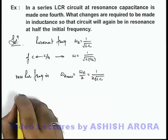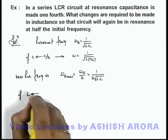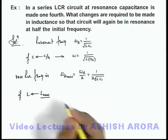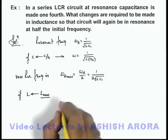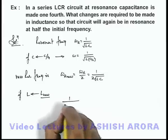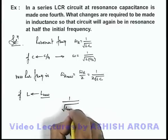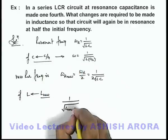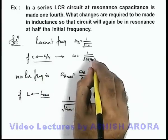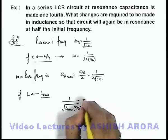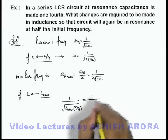Now if L is replaced by L_new, we are required to find the value of L_new. So we can write the new resonant frequency as 1 by root of L_new multiplied by C/4, since the capacitor is changed to C/4. This should be equal to 1 by 2 root of LC.